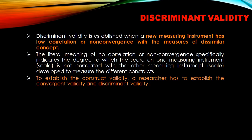Discriminant validity is established when a new measuring instrument has low correlation or non-convergence with measures of dissimilar concepts. Two unrelated things should definitely have low correlation and should not be converging. This is also related to multicollinearity in regression — if two independent variables have a high degree of correlation, it's very difficult to say which variable is causing change in the dependent variable. If variables have discriminant validity, the problems of multicollinearity would not occur.